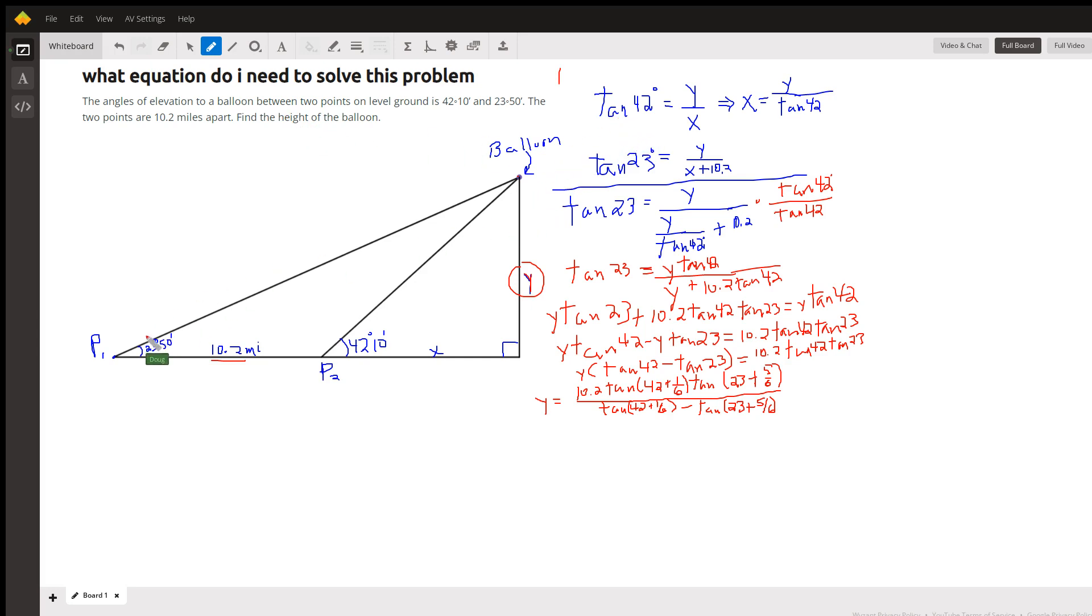So, from the big triangle, I'm sorry, from this little triangle right here to the right, we can say the tangent of 42 degrees 10 minutes is Y over X. I left off the minutes until the very end.